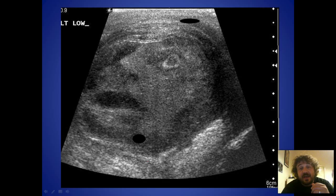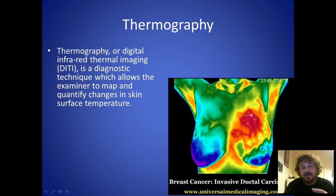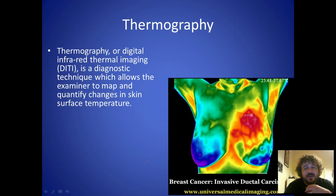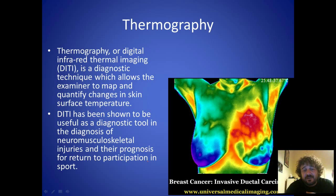Thermography is digital infrared imaging — it measures heat, since infrared light is heat light. It maps the different changes in temperature across the body. Cancer tends to draw a lot of blood to it, making that area warmer than surrounding tissue, so thermography is quite useful for diagnosing cancer. It also detects injuries: tearing a muscle causes a lot of blood flow to that area, making it hotter, and thermography can track how the injury is progressing.